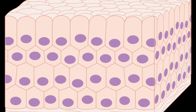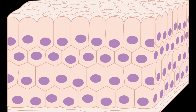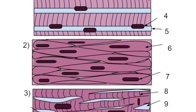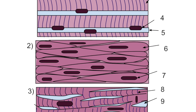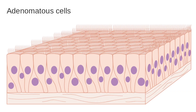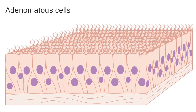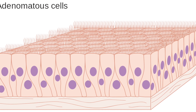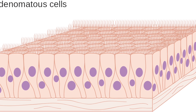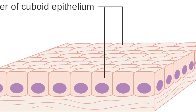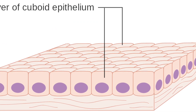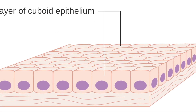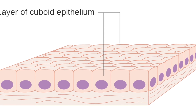In animal cells we have muscular tissue, which can contract to bring about movement. We have glandular tissue which contains secretory cells that can produce substances such as enzymes and hormones. We have epithelial tissues which cover the outside of your body and the internal organs.